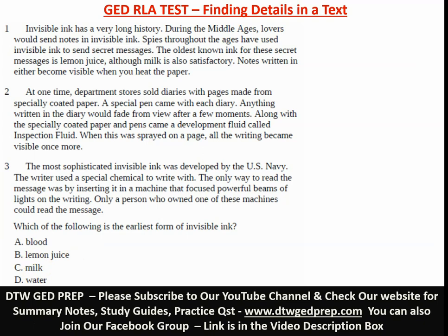So lemon juice is the right answer. You can see how easy this is — you don't need to go through everything. Just scan the answer options, check which words appear in the text, eliminate those that don't appear, then read the relevant paragraph for the remaining options. The text says 'the oldest known ink for this secret message is lemon juice,' and although milk is also satisfactory, it is not correct. Lemon juice is the right answer.